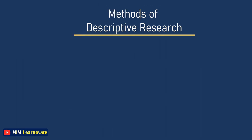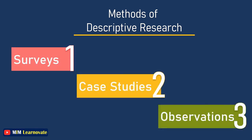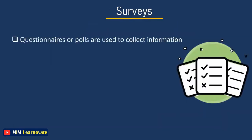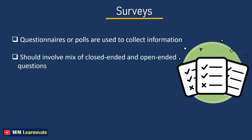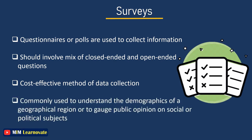There are three key methods used to carry out descriptive research: surveys, case studies, and observations. In survey research, questionnaires or polls are used to collect information on a specific topic from respondents. Surveys should involve a mix of closed-ended and open-ended questions. They are a cost-effective method of data collection, conducted through digital and non-digital channels such as email, websites, and phone surveys, and are commonly used to understand demographics or gauge public opinions.